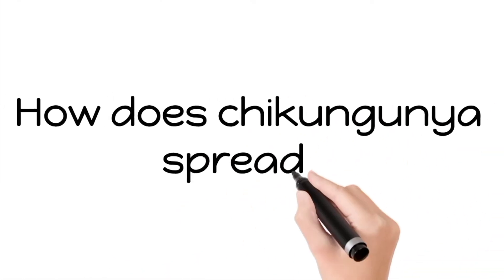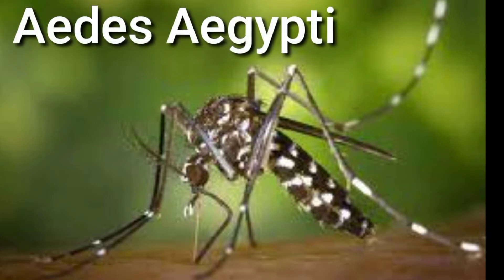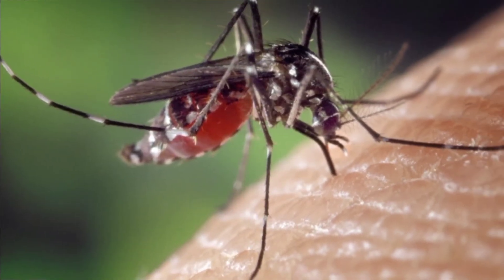How does Chikungunya spread? The mosquitoes called Aedes aegypti breed in stagnant water and they typically bite during the day. They are known to be most active early in the morning and in the late afternoon.